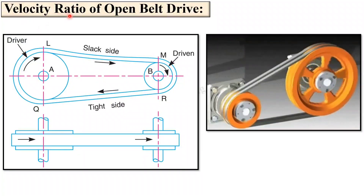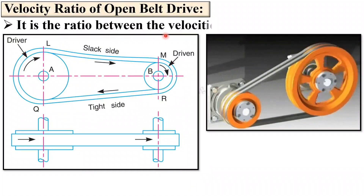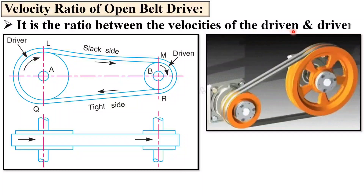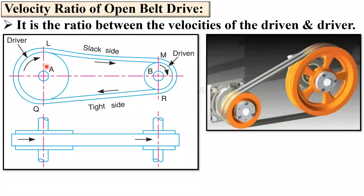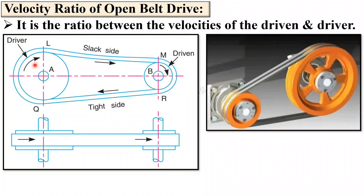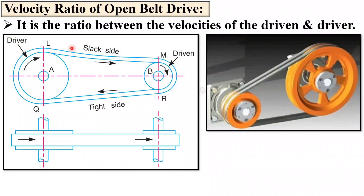Now, what do you mean by velocity ratio? It is simply a ratio between the velocities of the driven and the driver. Here you can see this is the driven shaft and this one will be the driving shaft. So it is a ratio of the velocity of the driven shaft to the velocity of the driver.